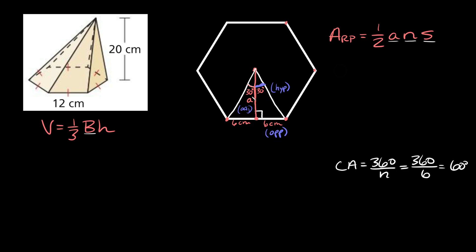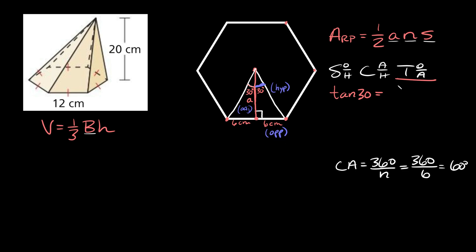For our right triangle, we're looking for the adjacent side and we know the opposite side. Which trig function uses the adjacent and opposite sides? If you think about the acronym SOHCAHTOA, it's tangent that uses the opposite and adjacent sides. So we're going to take the tangent of 30 degrees: tangent of 30 equals opposite over adjacent, which is 6 over A.